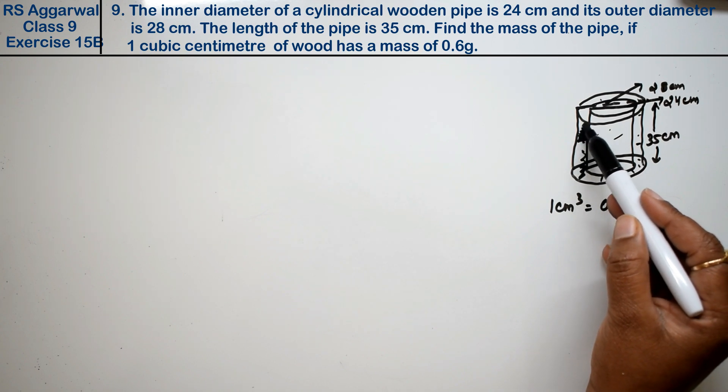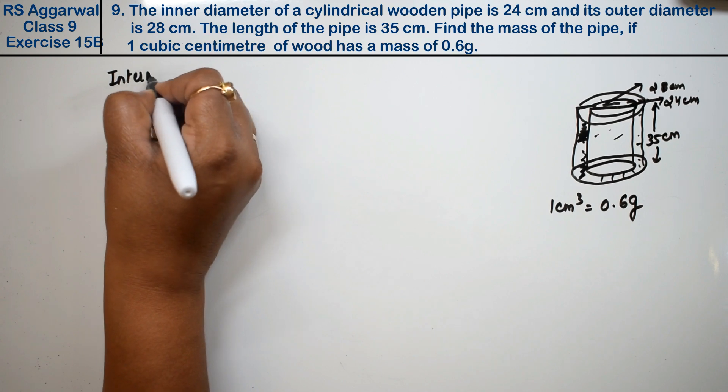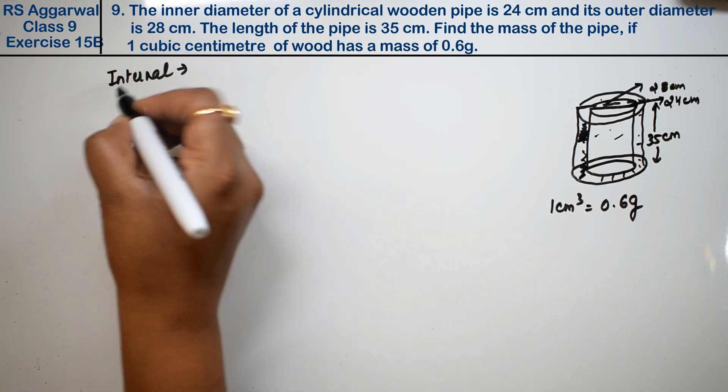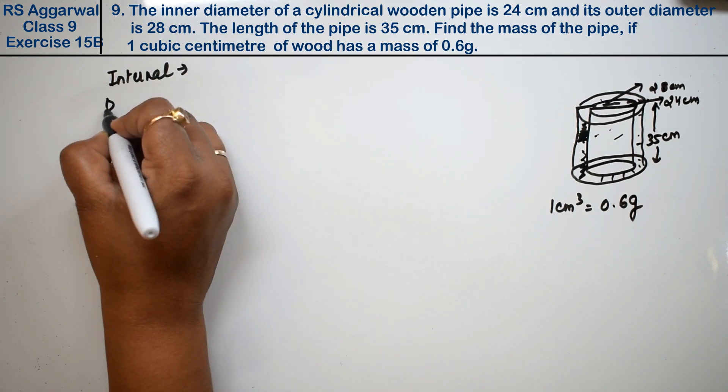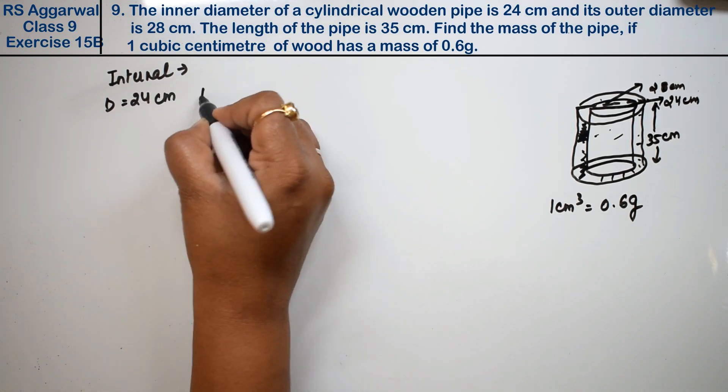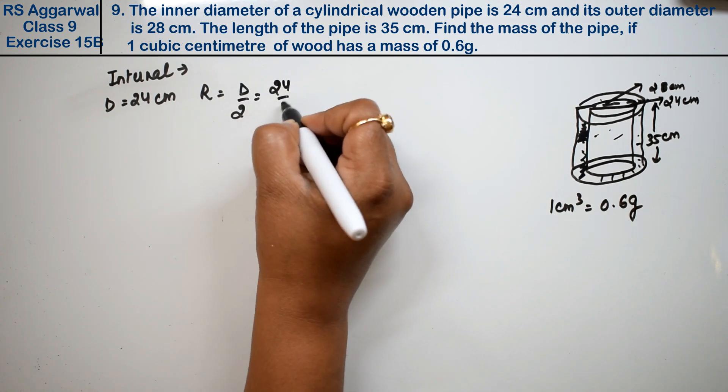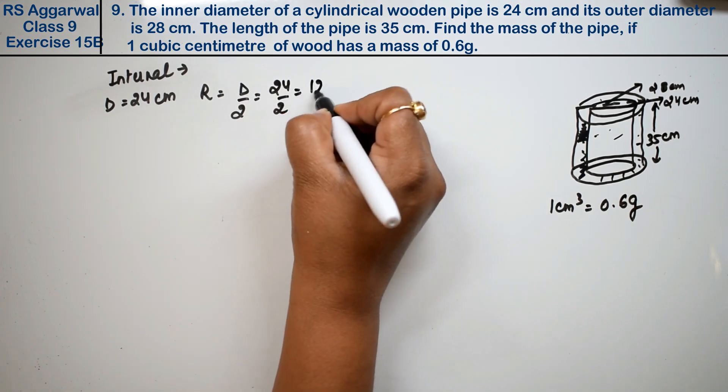So only the wood used will remain. For the internal part, the diameter given is 24 cm. So the radius is diameter upon 2, that is 24 upon 2, which equals 12 cm.